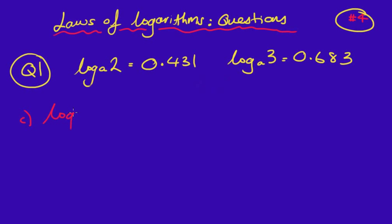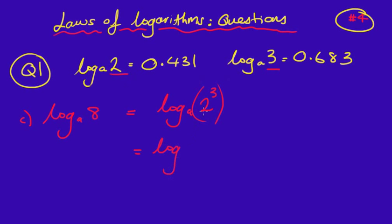Now I am going to find the value of log_a(8). We have used the first two logarithm laws, so I am going to be using the one with the power. 8 can be written as log_a(2³). I can bring the 3 to the front and say 3 times log_a(2). We know log2 is 0.431, so 3 times 0.431 gives us the answer of 1.293.